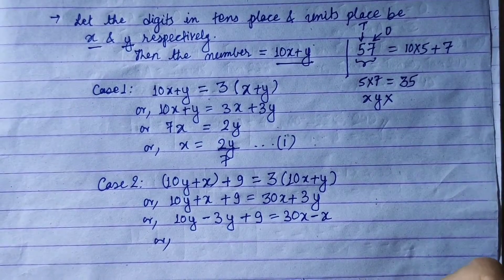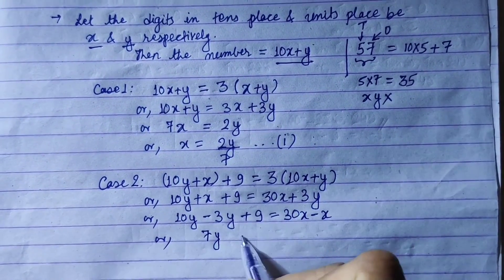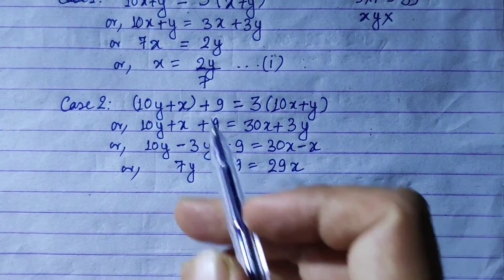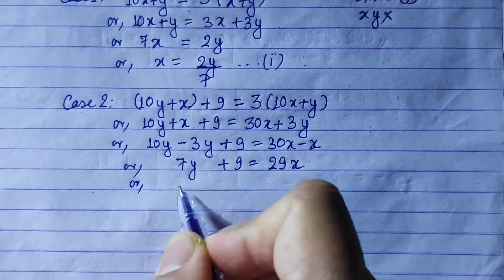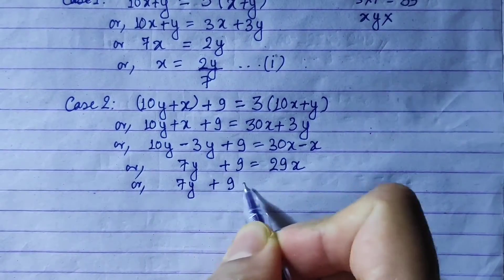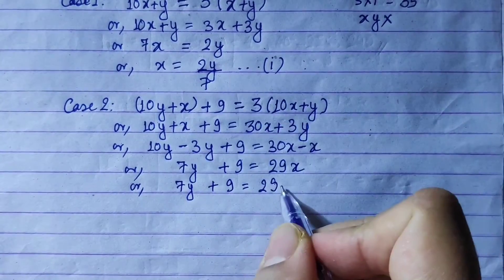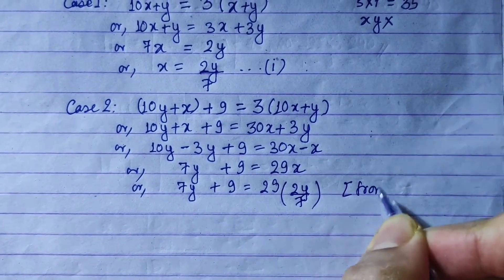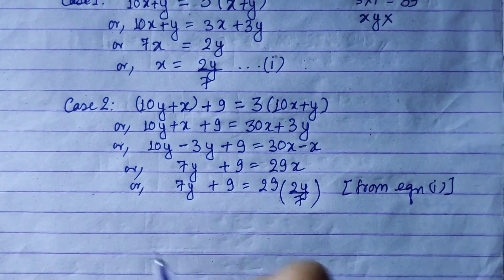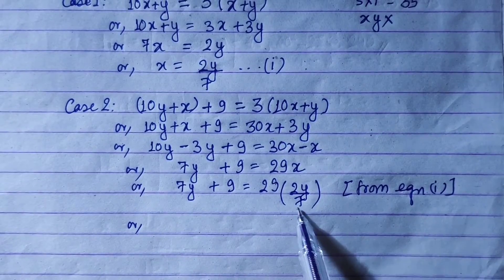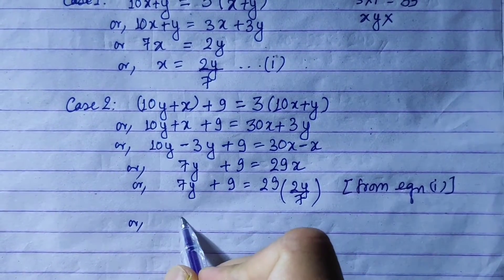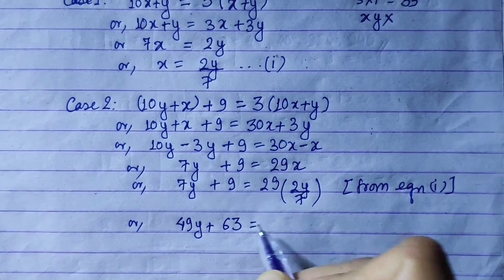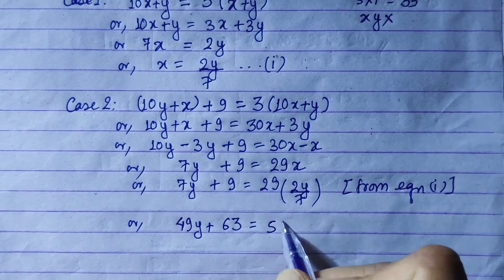We substitute x from equation 1, replacing x with 2y divided by 7. Cross-multiplying gives us: 49y plus 63 is equal to 58y.